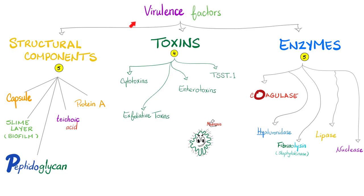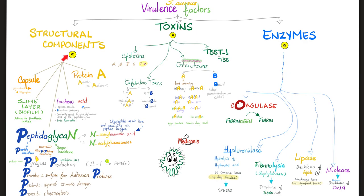Staph aureus has many virulence factors, including structural components, toxins, and enzymes. The structural components are the capsule, the slimy layer, peptidoglycan, teichoic acid, and protein A. The toxins are cytotoxins, exfoliative toxins, enterotoxins, and toxic shock syndrome toxin number one. The enzymes of Staph aureus are coagulase, hyaluronidase, fibrinolysin, lipase, and nuclease.